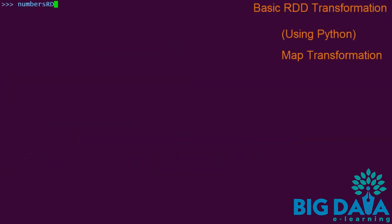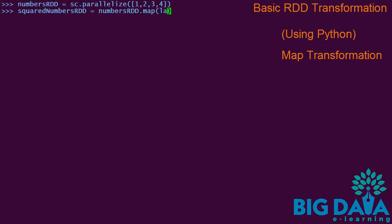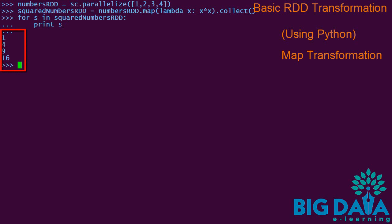Let's try the same transformation examples in Python. For the map transformation using Python, this is similar to the Scala code except for some syntax differences. Here we use lambda expressions to pass to map transformation. The result elements are put into the resultant squared numbers RDD. We use a for loop to print the elements of the squared numbers RDD, and here you get the squared values of each element.